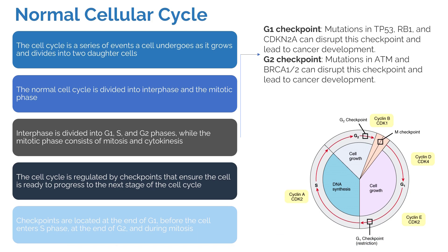There are two key checkpoints — G1 and G2 — that consist of various genes including TP53, RB1, CDKN2A, ATM, BRCA1, and BRCA2. Mutations in any of these genes can dysregulate these checkpoints and eventually lead to cancer development. For example, BRCA1 and BRCA2 are well-known genes for breast cancer — they enable DNA repair, and if they are mutated, the cell will continue to grow without undergoing apoptosis when needed.